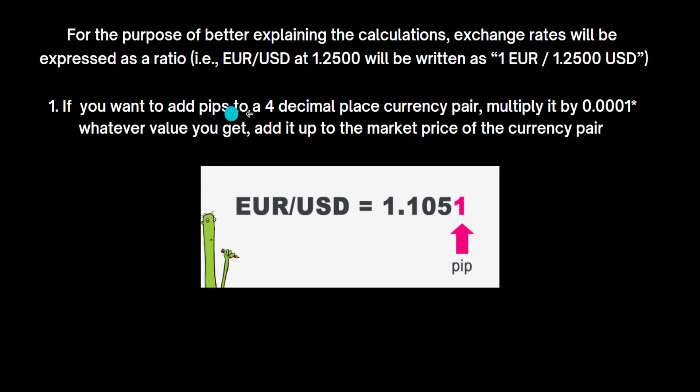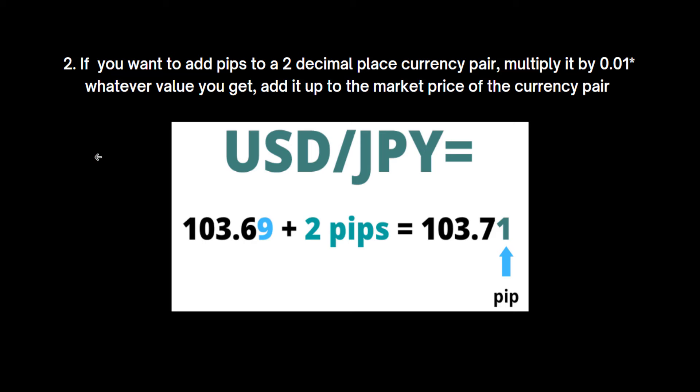So how do we calculate a pip? If you want to add pips to a four decimal place currency pair, you will multiply the number of pips by 0.0001. Whatever value you get, add it to the market price of the currency pair. If you want to add pips to a two decimal place currency pair, multiply by 0.01, then add that value to the market price of that currency pair.